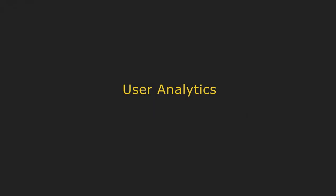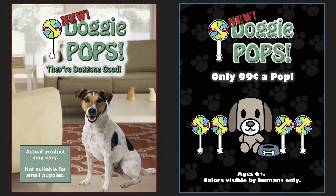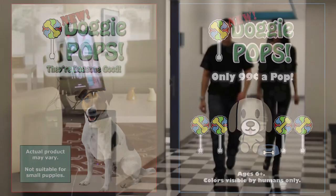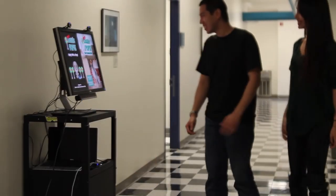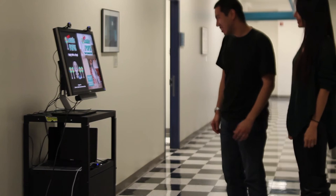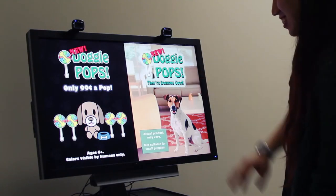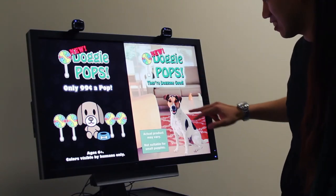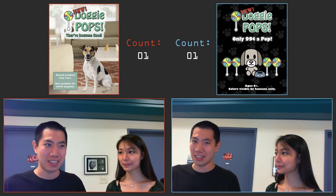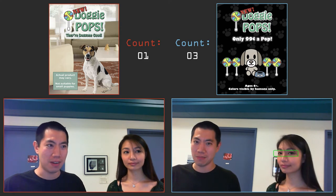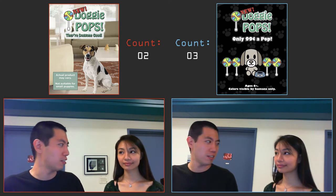Next, we can also use our technology to measure consumer attention. Suppose we have two versions of an ad and we want to see which is more effective. Here we display them side by side and place ordinary webcams above them. With our technology, we can automatically count how many times they are viewed. Here are the feeds from the webcams themselves — notice the counters being incremented.